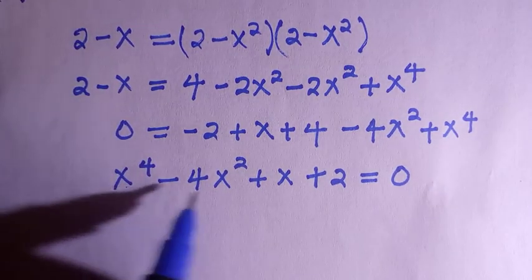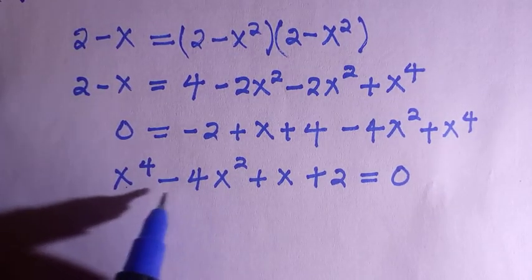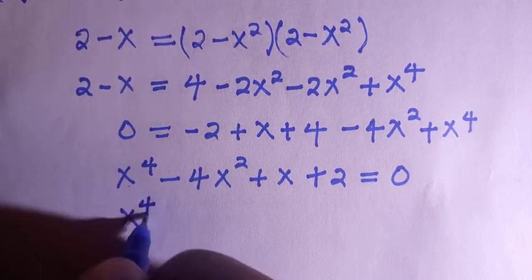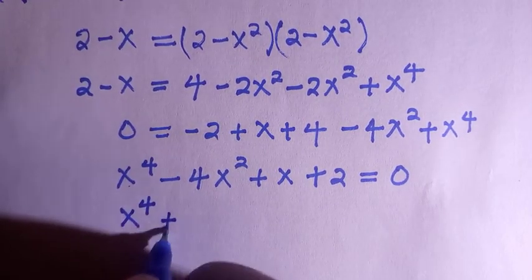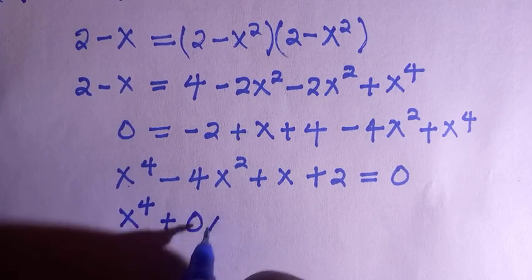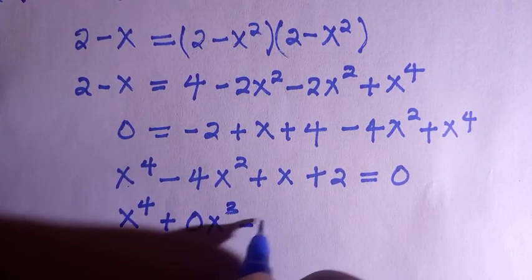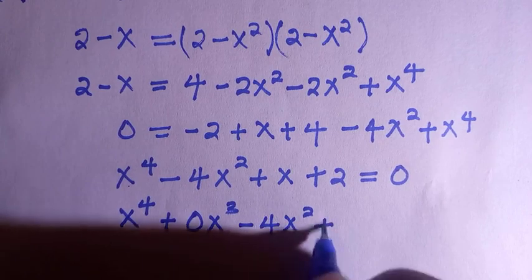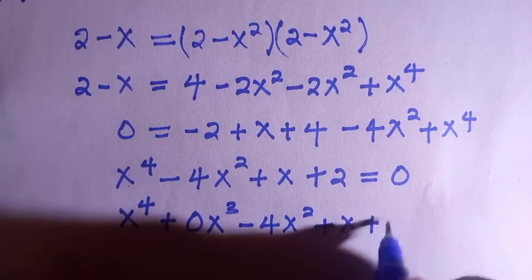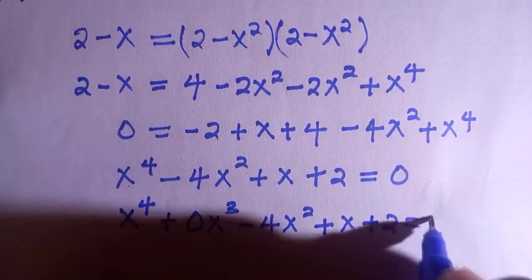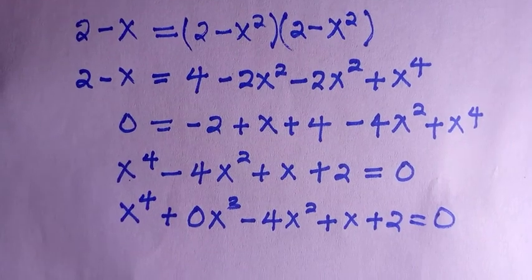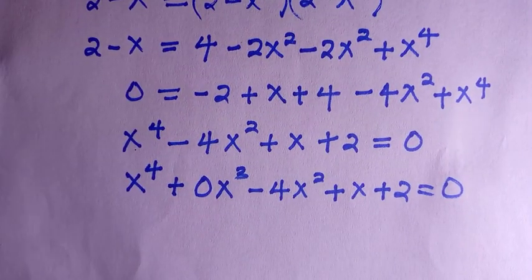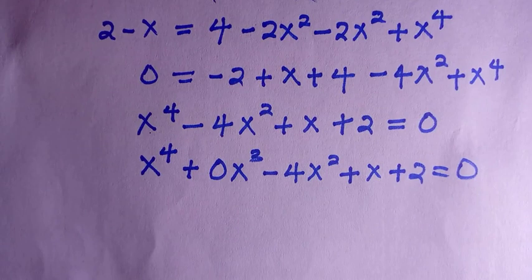There's a quality issue here: between x to the power 4 and x to the power 2, there's another term — x to the power 3 — which has been multiplied by 0. So we have x to the power 4, minus 4x cubed, plus... wait — we have negative 4x squared, plus x, plus 2, equals 0.